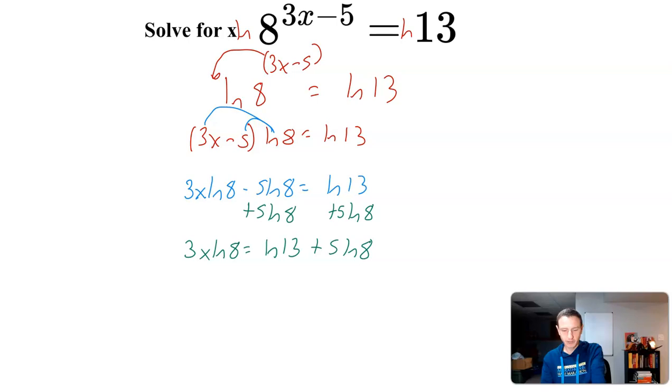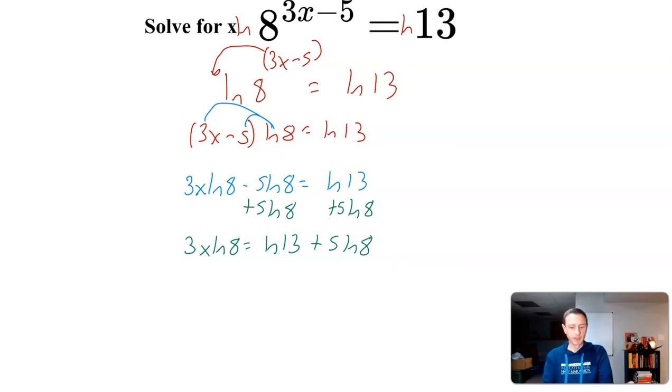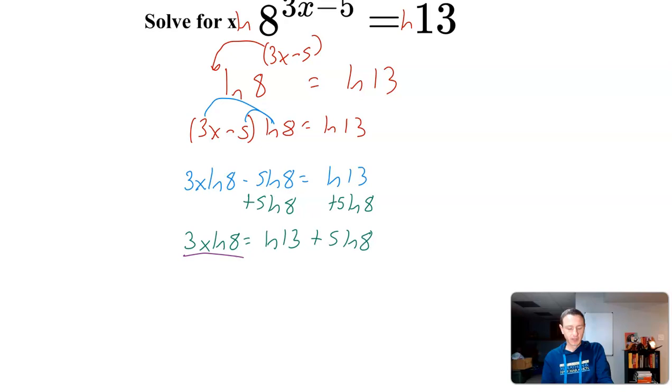Okay, look at this. We are in good shape here. Now I can solve for x. All I have to do is divide by 3·ln(8). And when I divide by 3·ln(8), I have to divide everything by 3·ln(8).